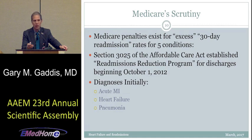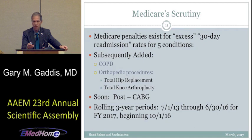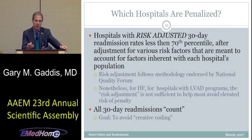In 2012, this program of Medicare penalties was initiated, and the first three diagnoses were acute MI, heart failure, and pneumonia. Later on, COPD and orthopedic procedures of total hip and knee replacement were added, and pretty soon cardiac bypass will be the next disease entity added. The penalties accrue during rolling three-year periods that begin on July 1 of a given year and end on June 30 three years later. For fiscal year 2017, the rolling period was July 1, 2013 through June 30, 2016, and FY2017 began October 1, 2016.